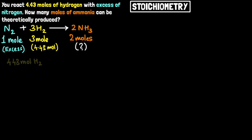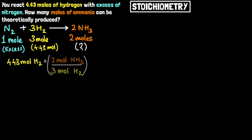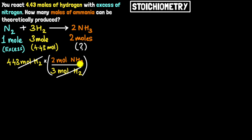Let's write down what's given: we have 4.43 moles of hydrogen. To convert from moles of hydrogen to moles of ammonia, I build a conversion factor: 2 moles of ammonia per 3 moles of hydrogen. The moles of hydrogen cancel out, and what I'm left with is moles of ammonia — giving me the amount of ammonia for 4.43 moles of hydrogen.